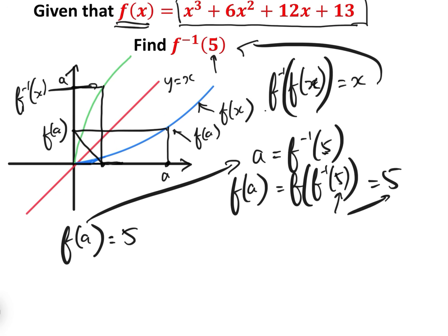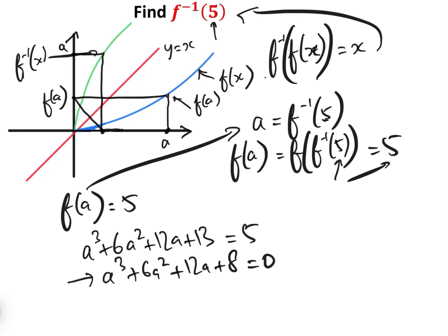Now we know that f(a), we know f(x) is x cubed plus 6x squared plus 12x plus 13, so therefore we know f(a) is a cubed plus 6a squared plus 12a plus 13, and we know that equals 5. So therefore a cubed plus 6a squared plus 12a plus 8 equals 0. And now what we can do is we need to try and find the solution to this, and fortunately this is (a plus 2) cubed equals 0. If you expand that (a plus 2) cubed, you get a cubed plus 6a squared plus 12a plus 8. And so therefore the answer is a equals minus 2.